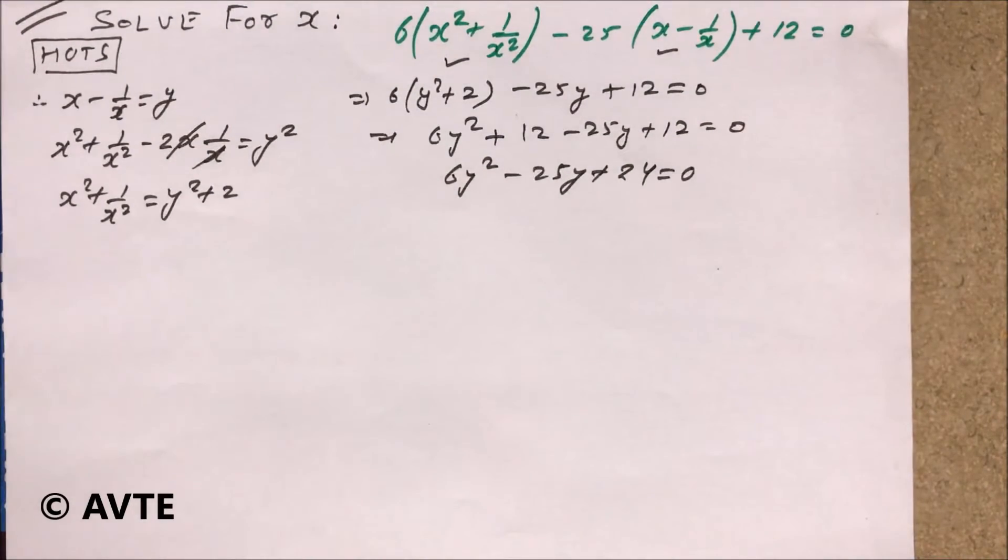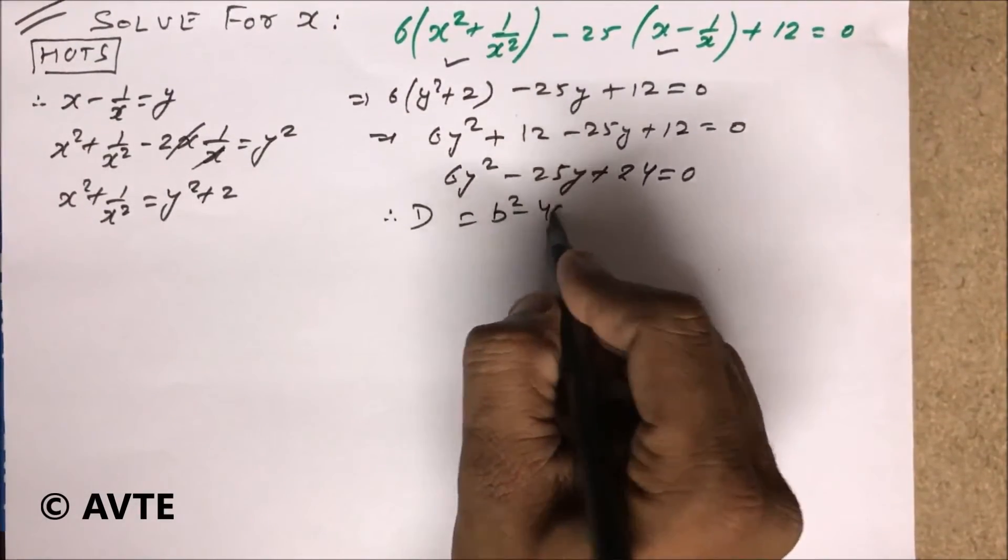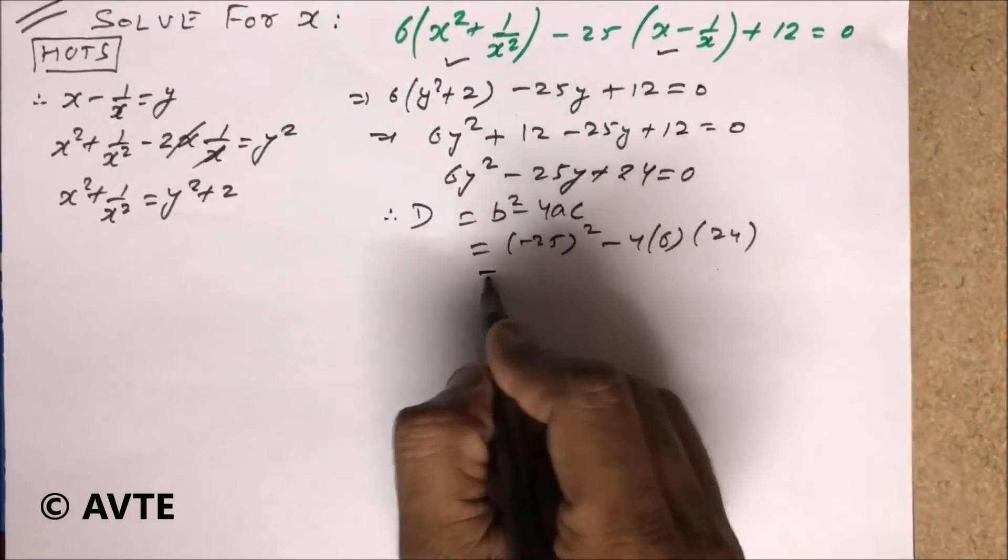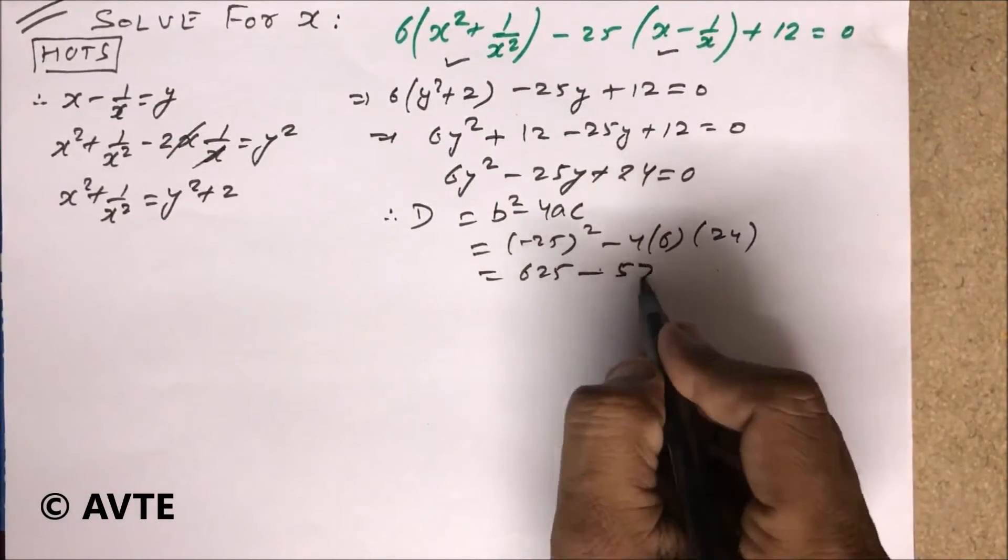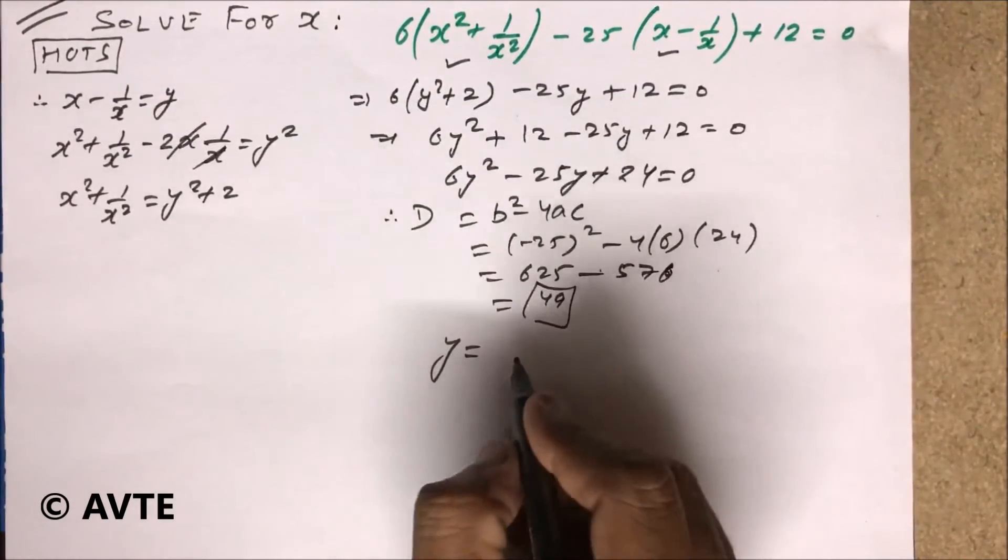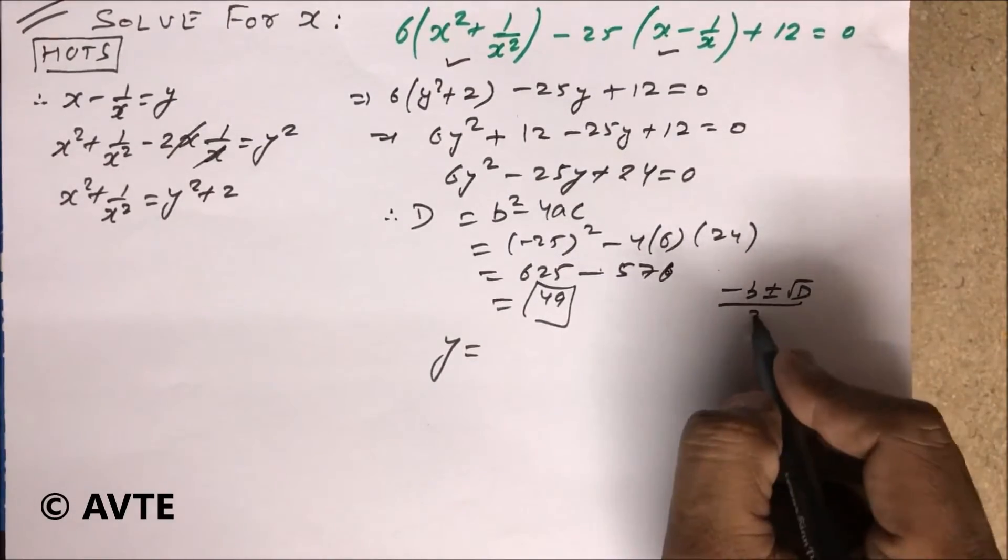You can solve this quadratic equation by any method like middle term or formula method or complete the square method. So the value of y is minus b plus minus root d upon 2a.